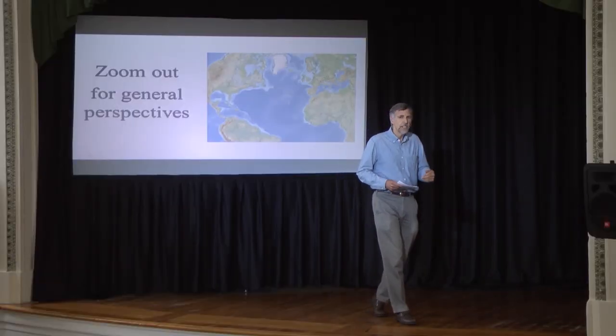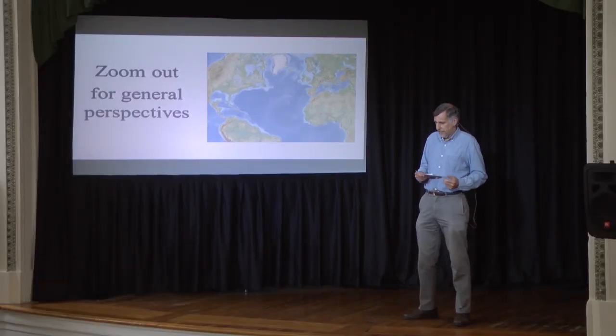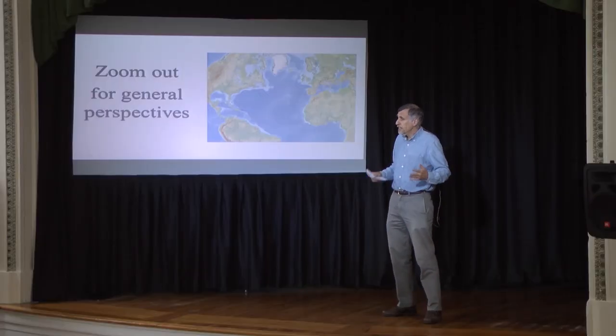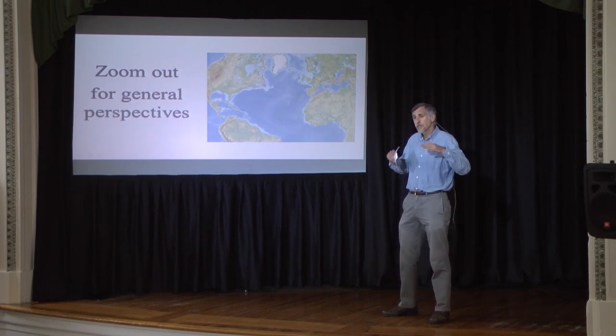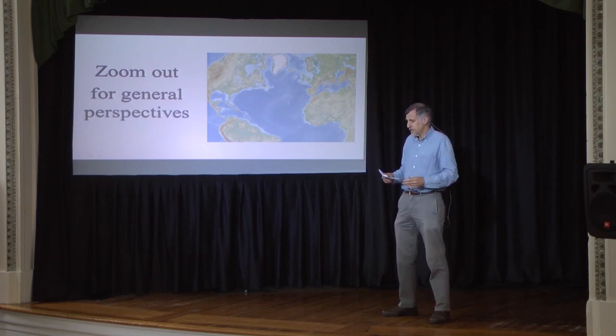Maps can zoom in for detail or out for broad overview. General education presents the zoomed-out perspective. Classes sample the information universe for broad familiarity, to answer the question: where are we? We could say we're in Florida, but with a zoomed-out perspective, you can get a picture that we're also in the North Atlantic region. So a general education lets you understand your relationships to the things around you.